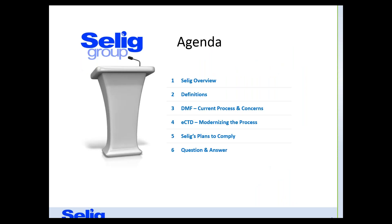Today's webinar will cover the following areas. First, a brief overview of SEALIG and our capabilities. Then we'll cover a few definitions and acronyms that are used in the presentation. Next, we'll cover the current DMF process and its drawbacks, and then the new eCTD process and its benefits. Finally, we'll bring you up to speed on SEALIG's plans to comply and our current status in meeting the May 5th deadline. The presentation will end with a question and answer session. All questions submitted will be answered either during the webinar or in a direct response to the attendee in the event we are unable to answer all questions.